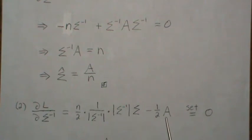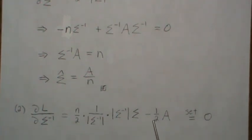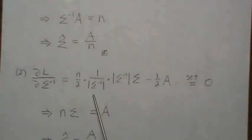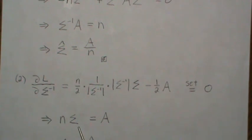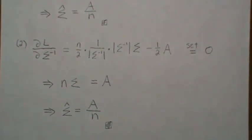And then the derivative of a trace, we just get A back. So it's minus one half times A, we set it to zero, and we multiply everything by two, and take this A to the other side. Sigma's cancel, and we're left with n sigma. Divide by n. Boom. Sigma hat, or the MLE of sigma is A divided by n.